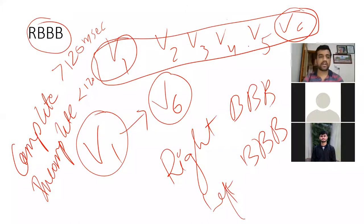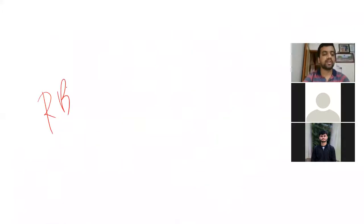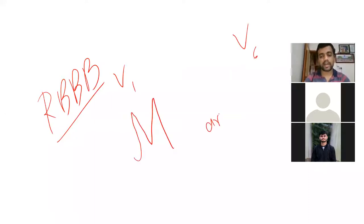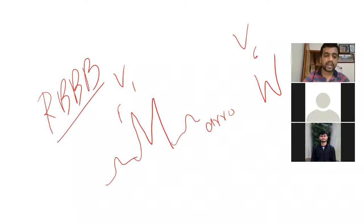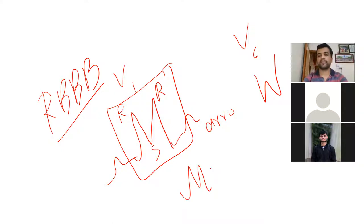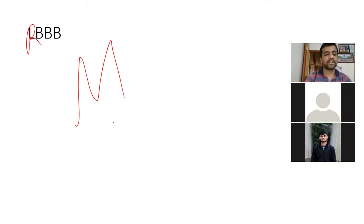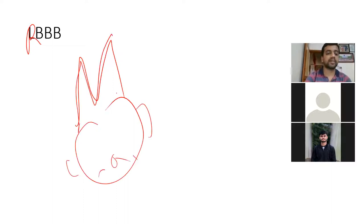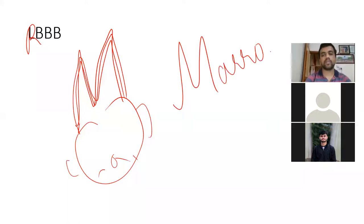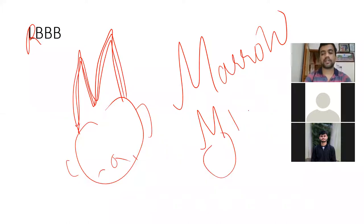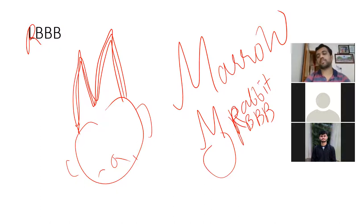For right bundle branch block, the pattern in V1 to V6 is called MARROW — M in V1 and W in V6. In V1, you have an RSR' pattern, which looks like the letter M. In V6, the QRS looks like a W. A mnemonic to remember: RBB has rabbit ears — the M shape represents the ears. So for RBBB: M in V1, W in V6 — MARROW.